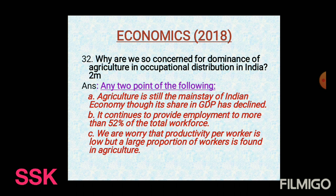Point C: Productivity per worker is low, but a large proportion of workers is still found in agriculture. Points A, B, and C together explain that agriculture employs a significant number of workers in the primary sector, yet productivity is insufficient. India, as a developing country, needs to address this imbalance in agriculture and the economy.